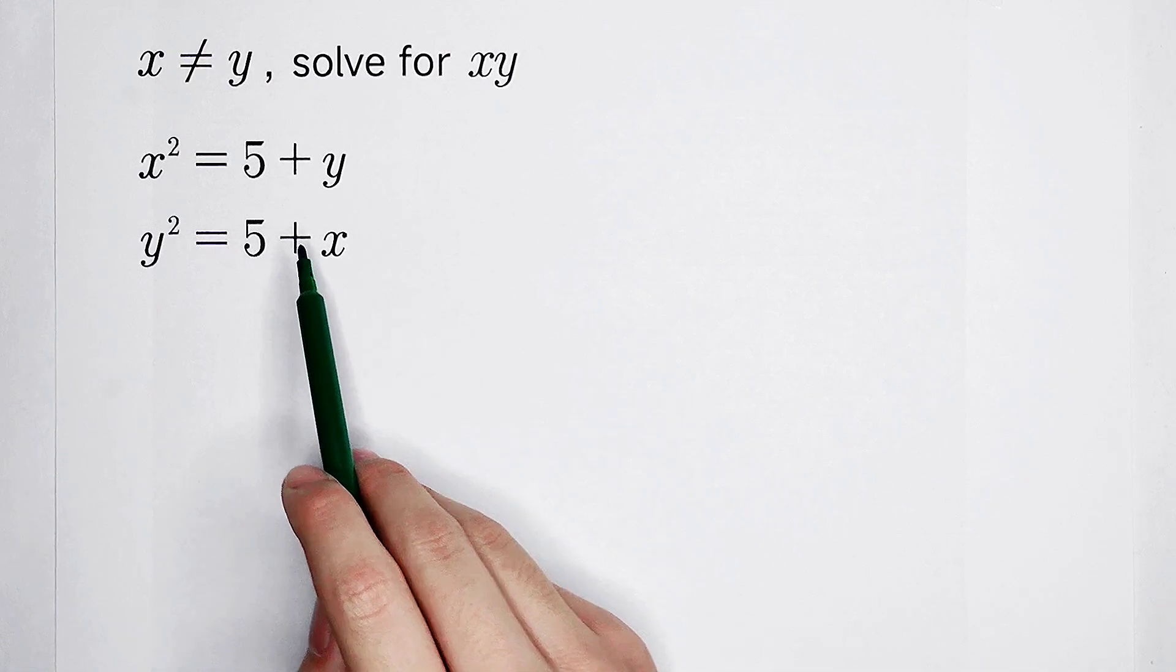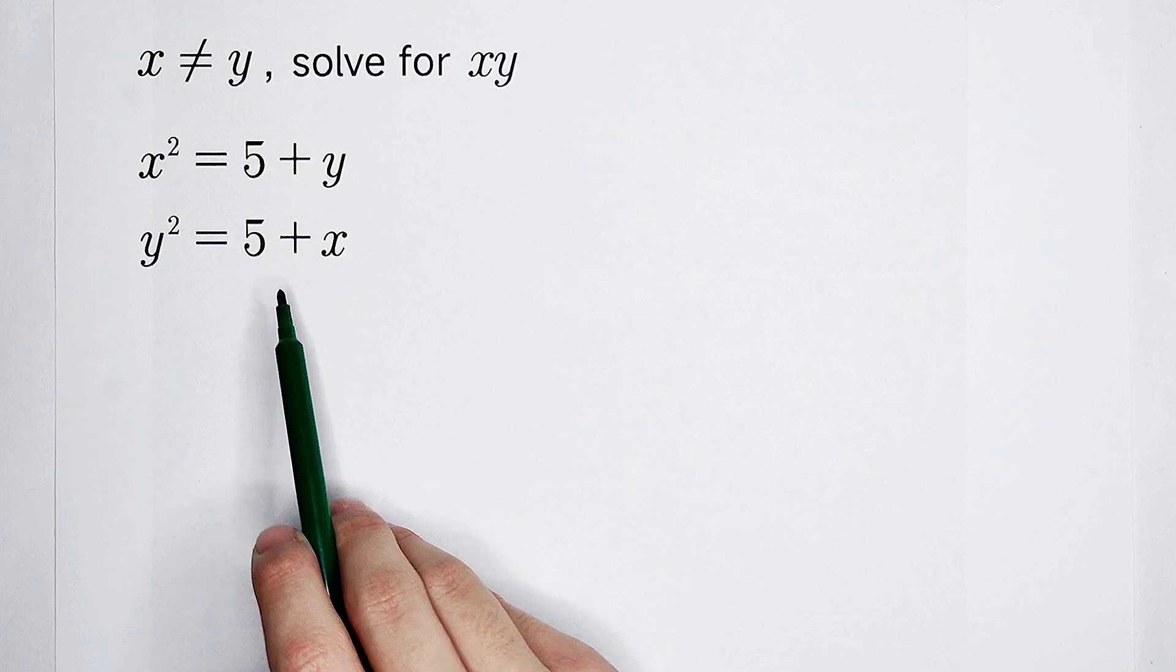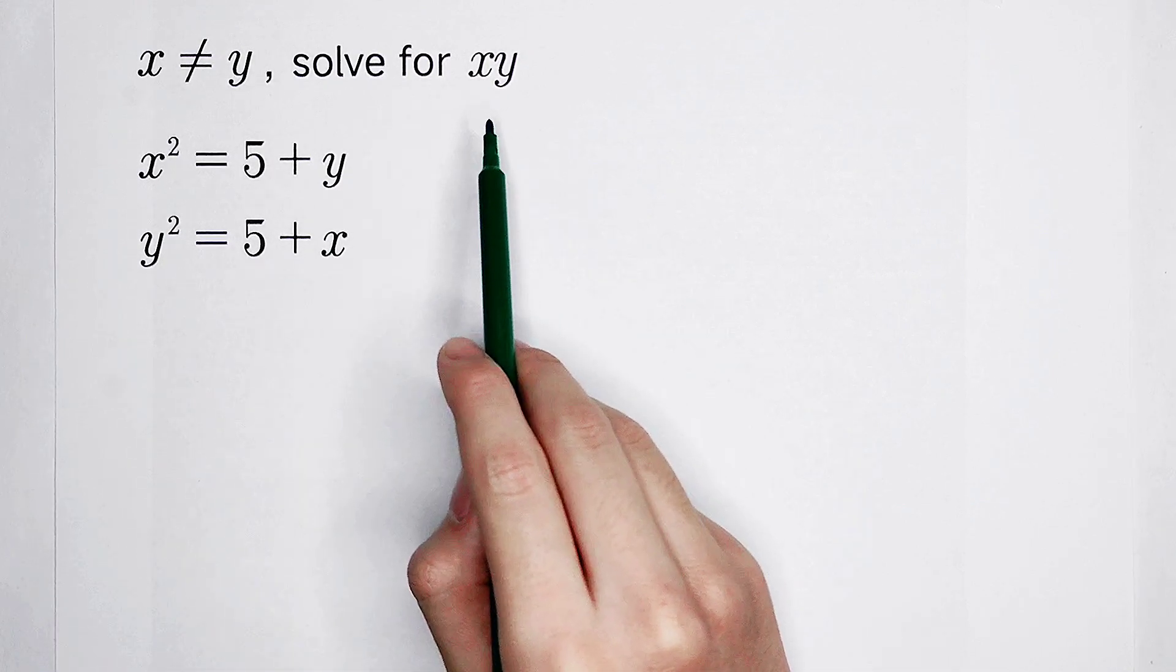x squared equals 5 plus y, and y squared equals 5 plus x. Solve for the value of x times y.